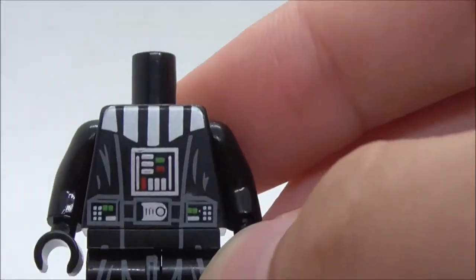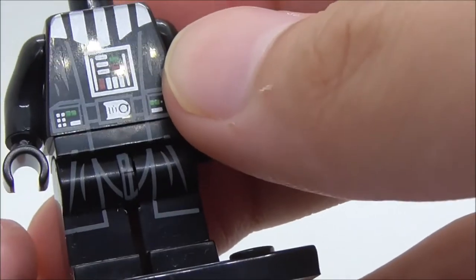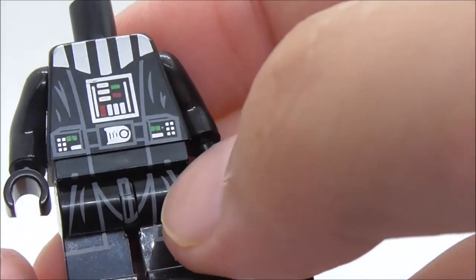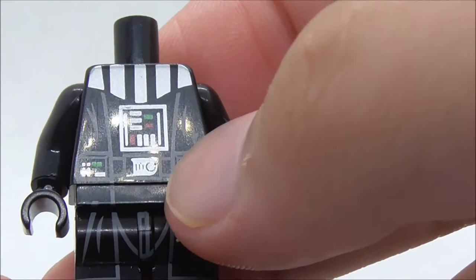The torso print for the figure, you got these silver stripes on the top, you got some gray lining for his cape and you got the life support system with all the buttons and stuff.